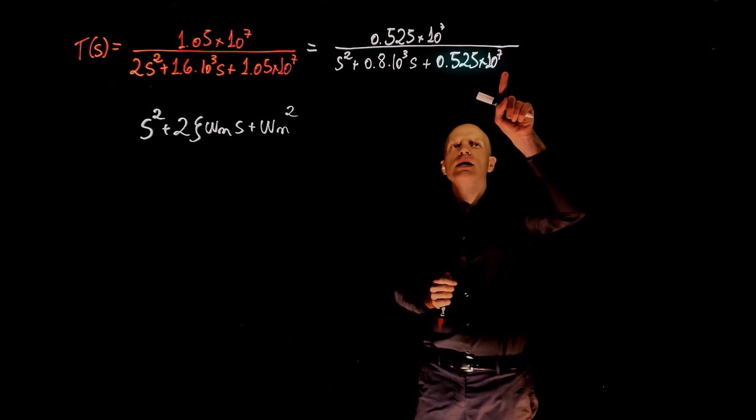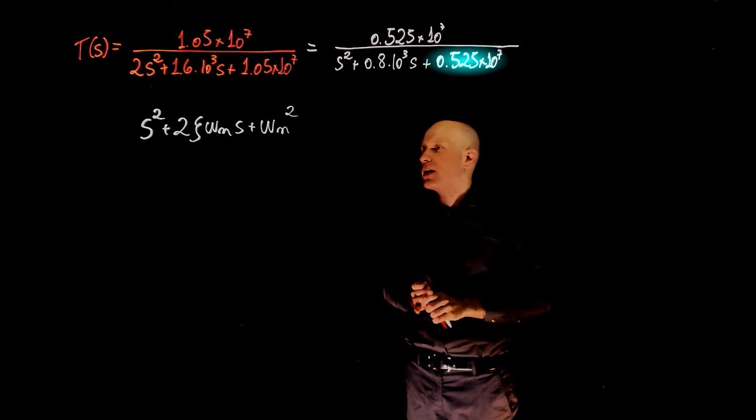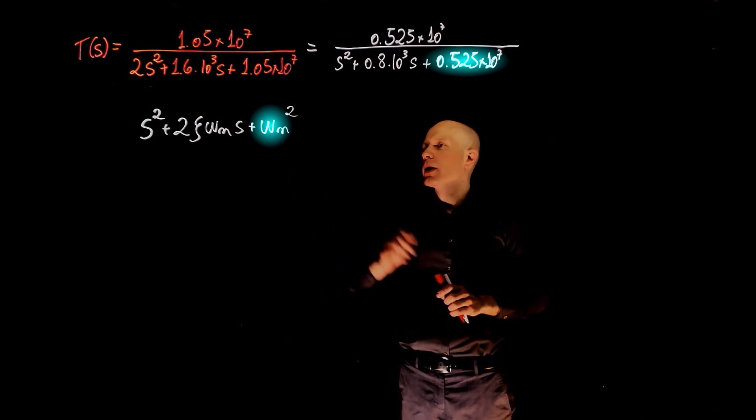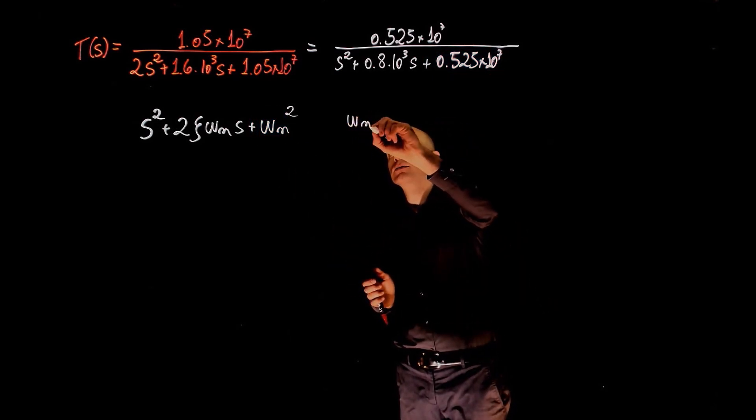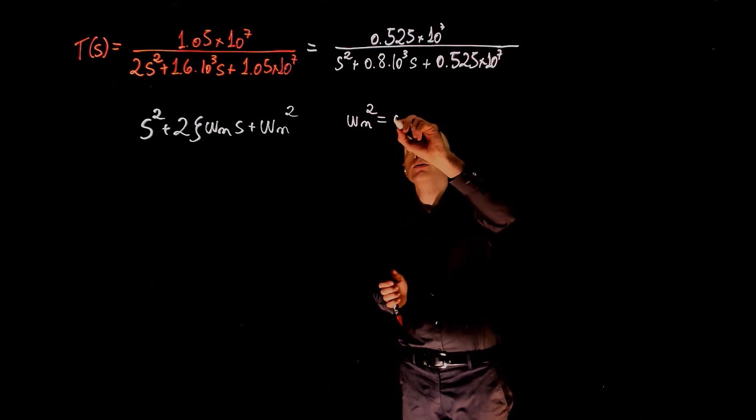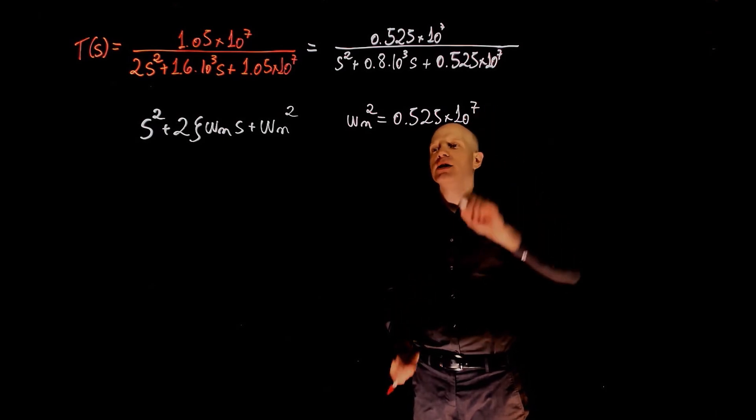What multiplies s to the power of 0 here is 0.525 times 10 to the power of 7 and that corresponds to omega n squared in the standard form. So omega n squared equals 0.525 times 10 to the power of 7.